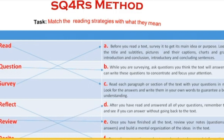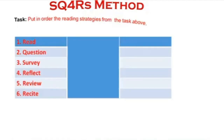Now let's move to the sixth strategy. These reading strategies are not put in order — they are not numbered one through six. From what you have concluded and understood, from what you have learned from the task above, try to put them in a logical order: number one, two, three, four, five, and six.